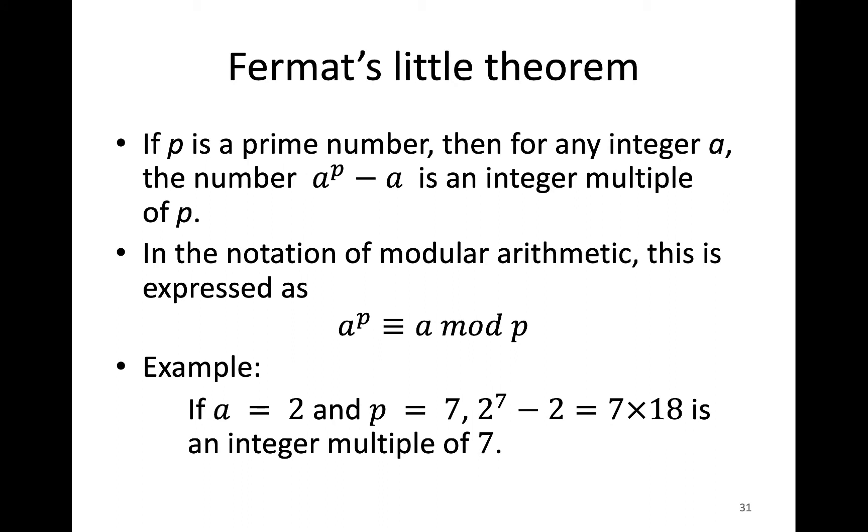Fermat's Little Theorem says that if p is a prime number, then for any integer a, the number a^p - a is an integer multiple of p.